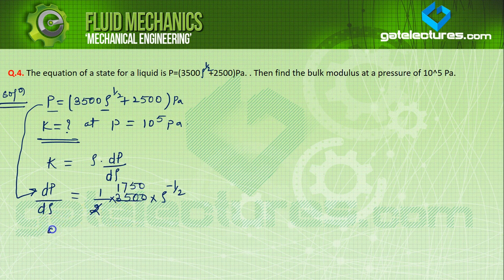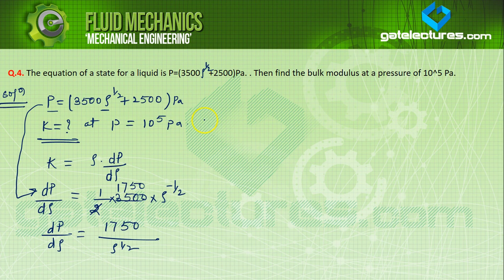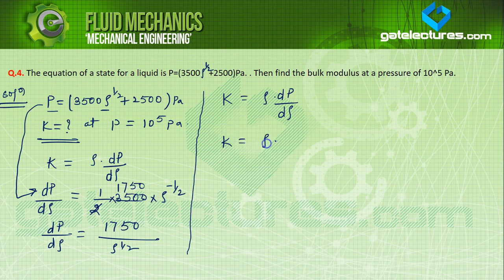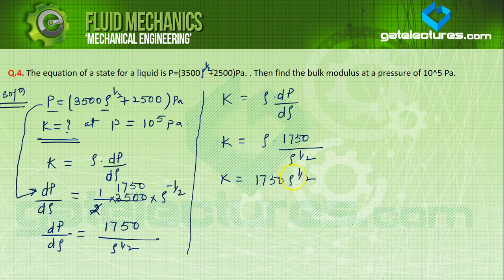So dP/dρ = 1750 / ρ^(1/2). Therefore K = ρ × (dP/dρ) = ρ × 1750 / ρ^(1/2) = 1750 × ρ^(1/2). Now we need the value of ρ^(1/2). The boundary condition given is at P = 10⁵ Pascal.